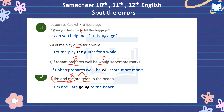So in the sentence 'Jim and me are goes to the beach,' there are two errors. The correct sentence is: Jim and I are going to the beach. This is the correct sentence. If you have any doubts, please comment below, students.